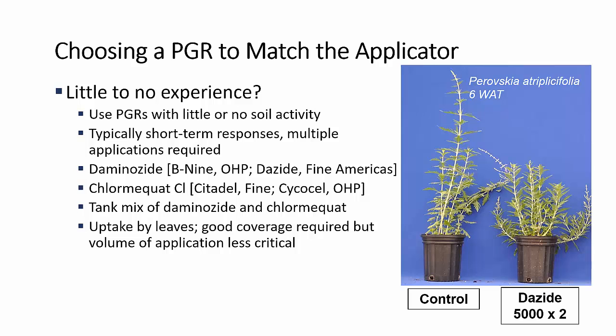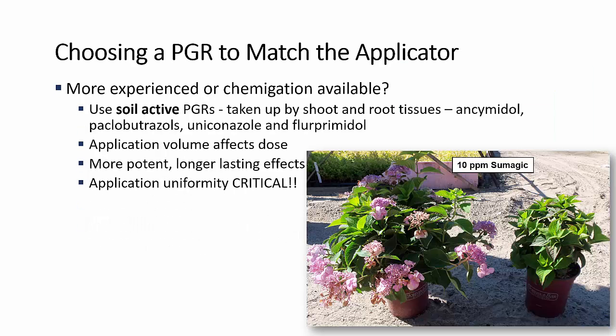The second thing in choosing a PGR is to match it to the applicator. For applicators who have little or no experience, you want to use a PGR with little or no soil activity. These are typically shorter-term responses, but the uptake is by the leaves and they are not in the soil, so the volume of the application is less critical. If you're more experienced, then you may want to move into the more soil-active plant growth regulators, which are taken up by both shoots and roots, where the application volume definitely affects the dose.